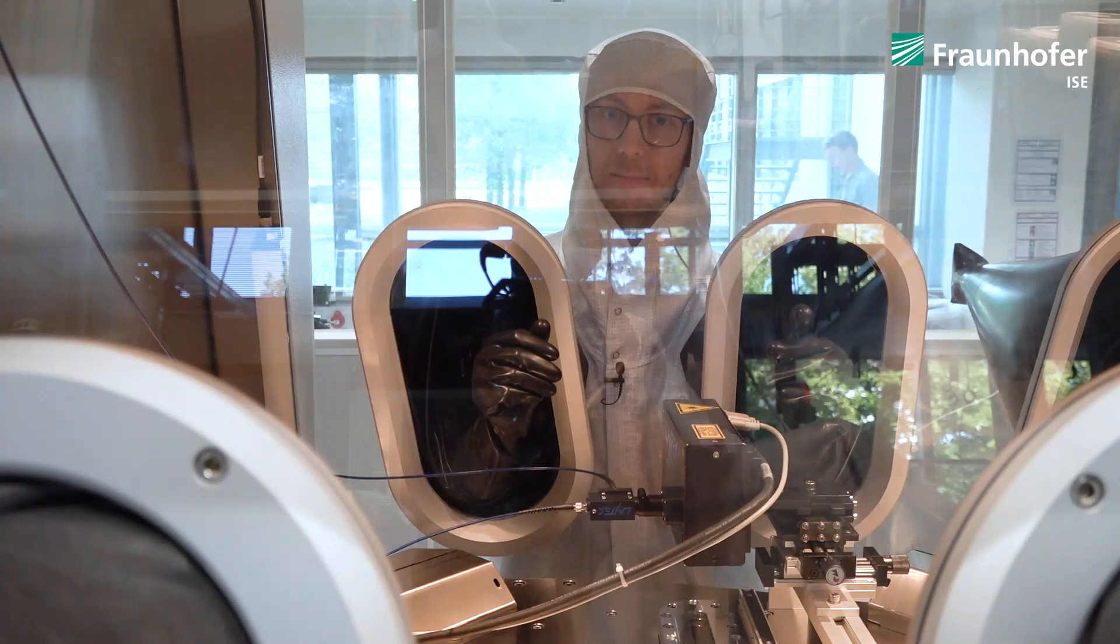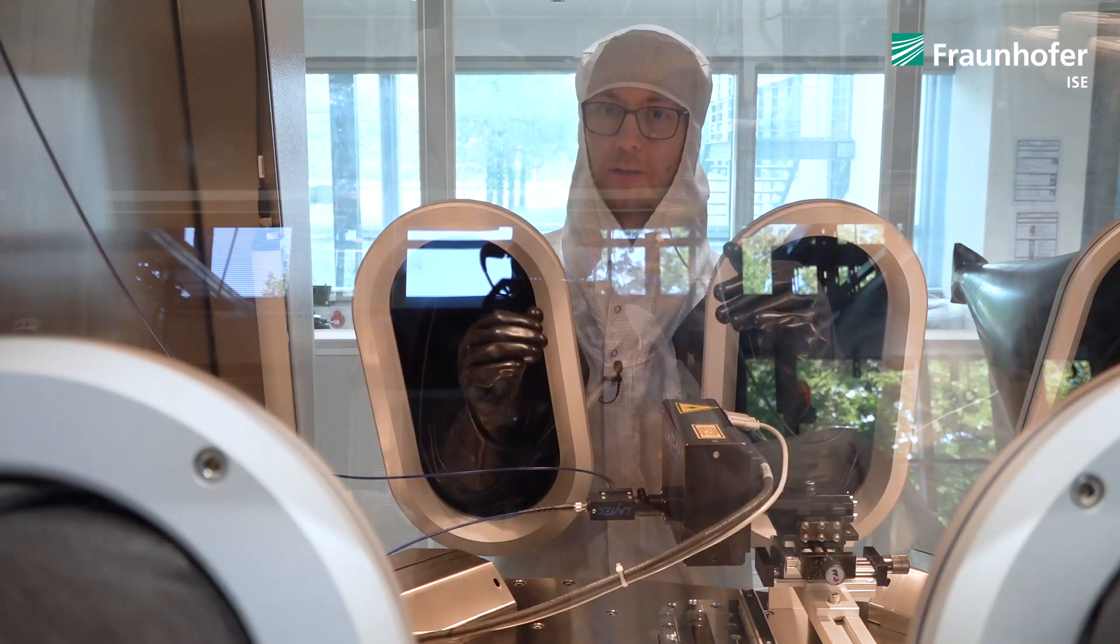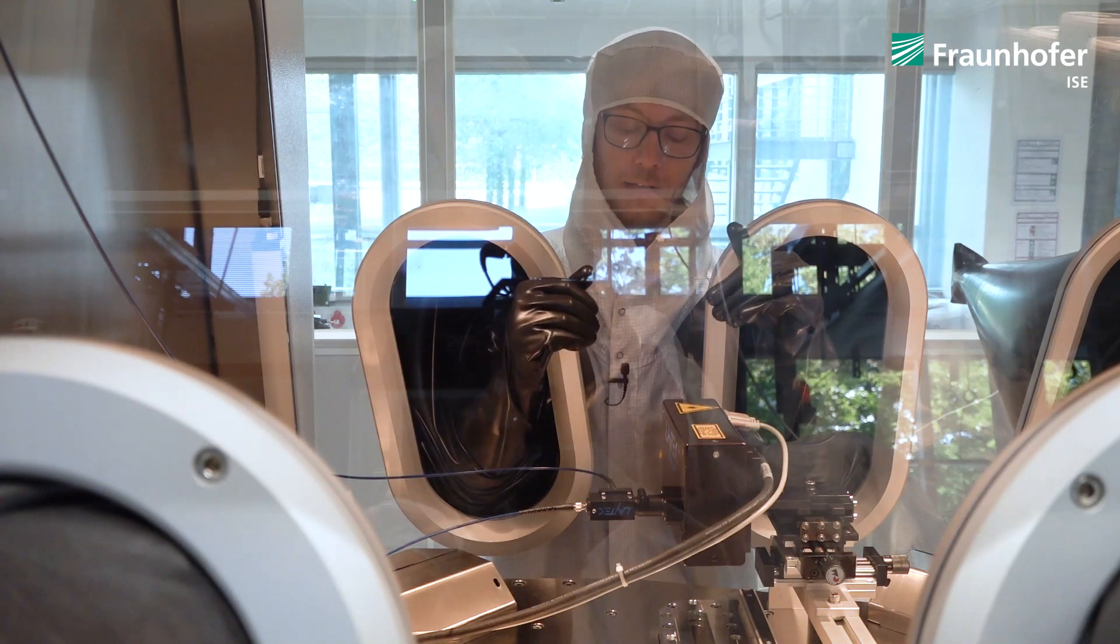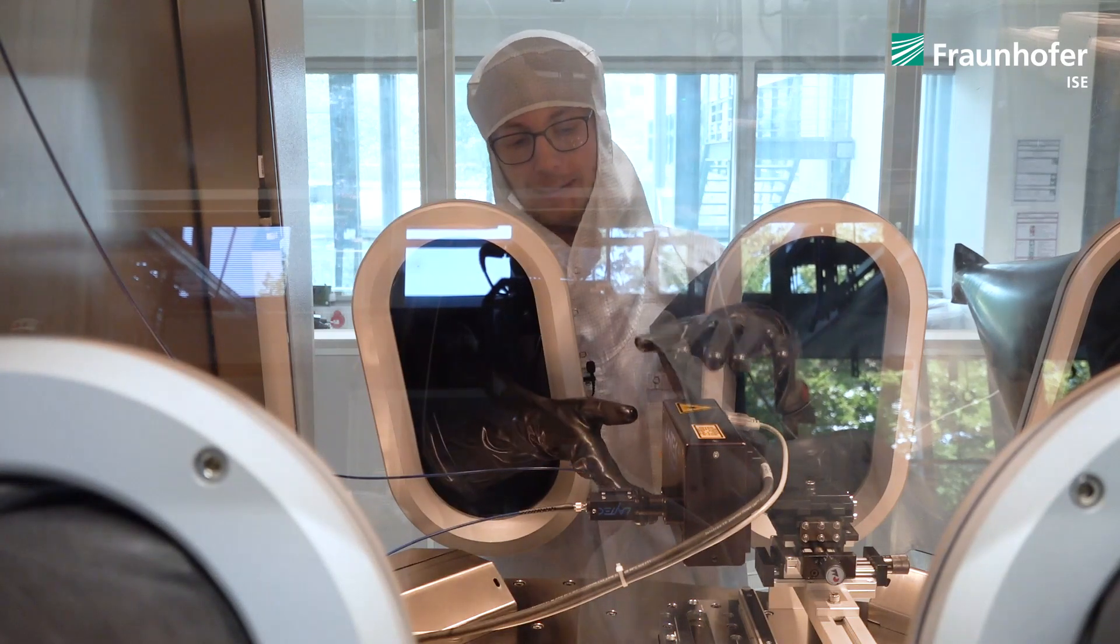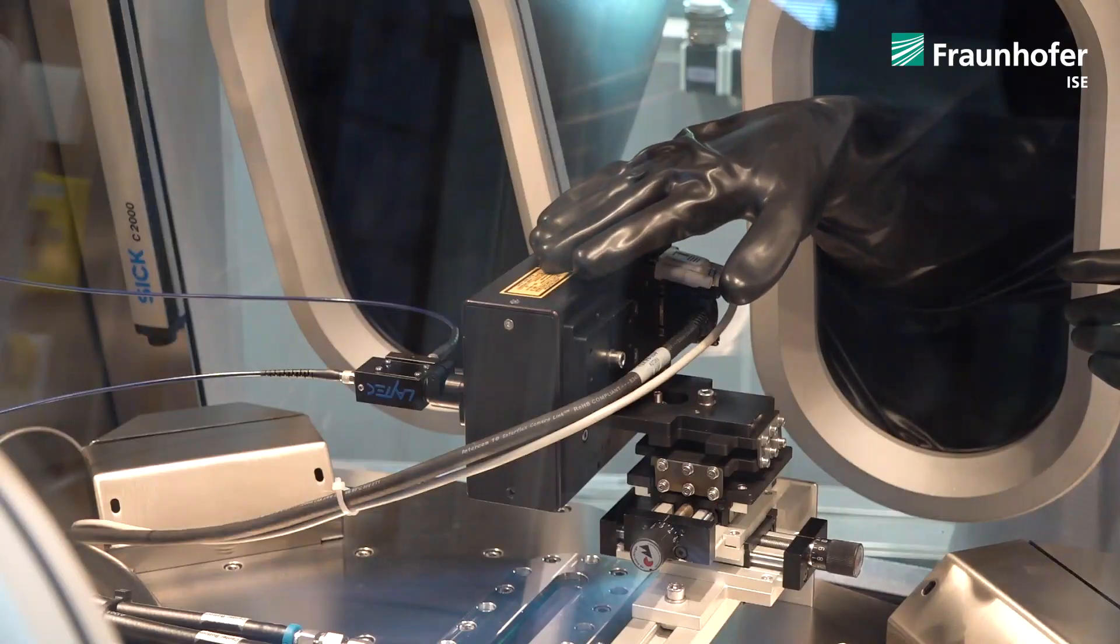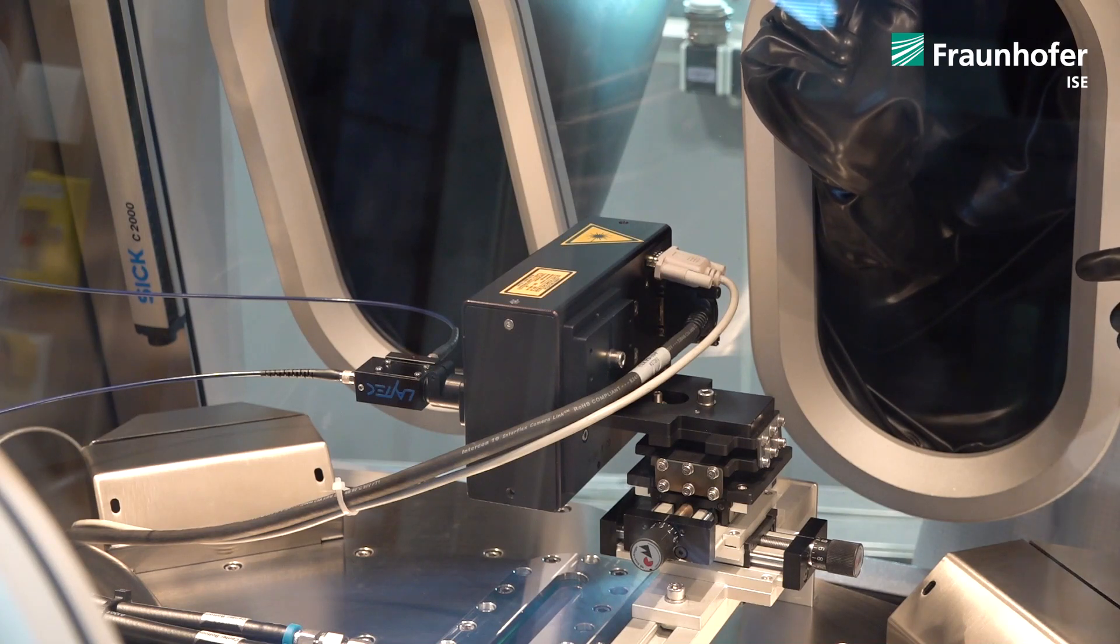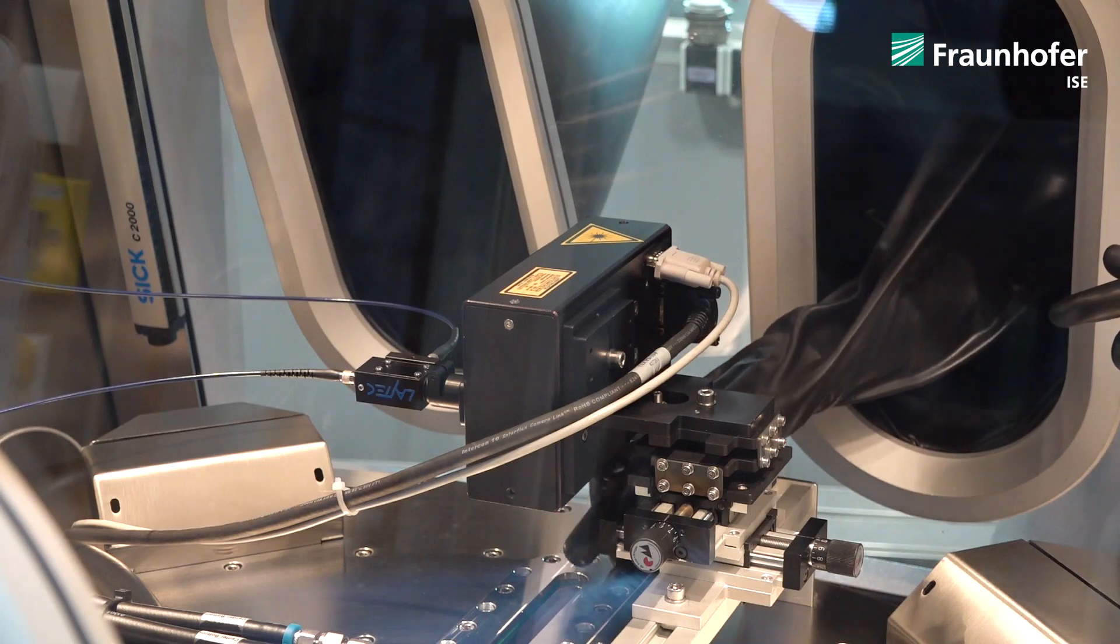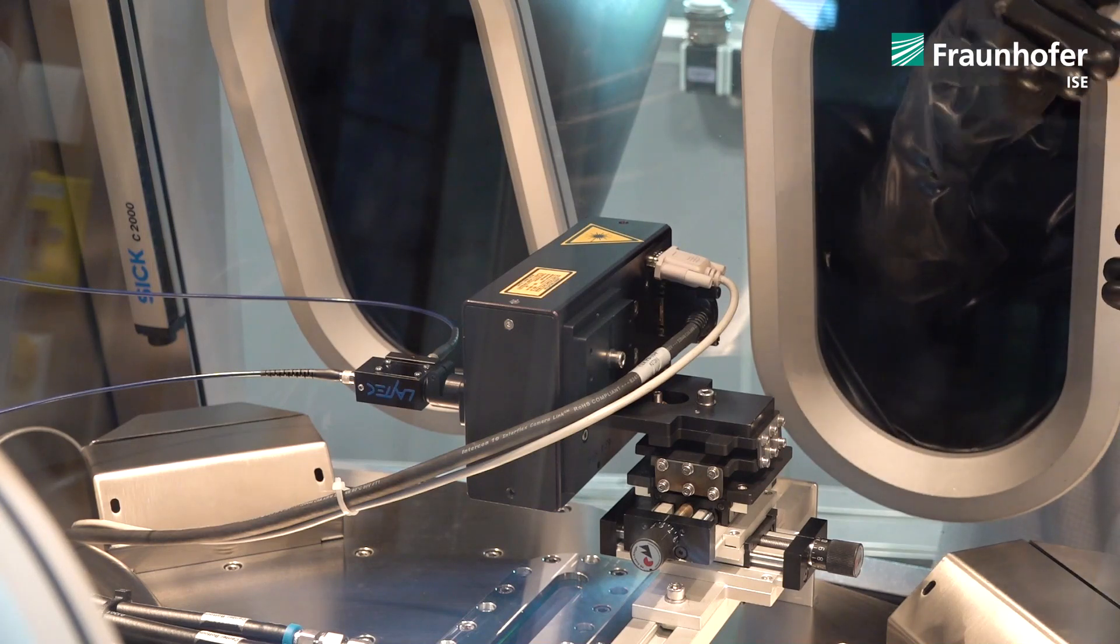One of the big challenges in multi-junction solar cell growth is to achieve current matching of the individual sub cells in order to have as high current for the overall device as possible. And to achieve this we use amongst other techniques in situ characterization. This is done with this tool here that employs three laser sources from the ultraviolet to the infrared light in order to probe the properties of the wafer surface while they rotate underneath this viewing port during the run.